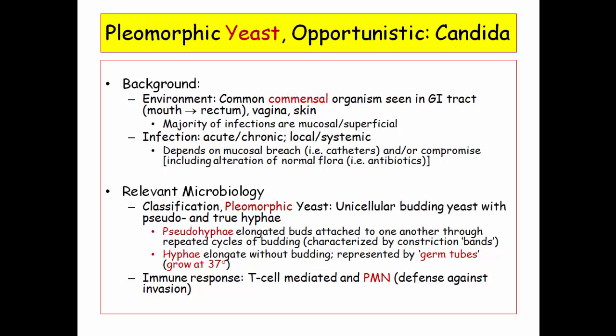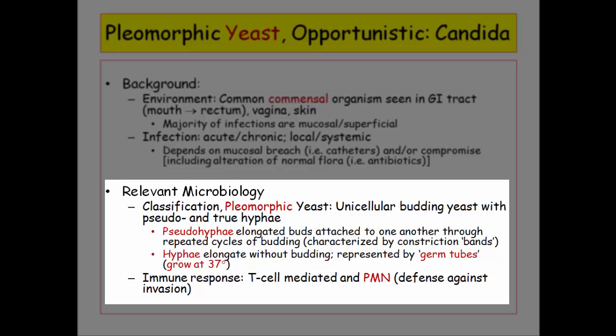You should be familiar with the terms pseudohyphae and true hyphae. Pseudohyphae are simply buds that don't detach — if you can envision that, it will also be easy to see the presence of constriction points, implying they do not have true septa. True hyphae are also described and will be represented by germ tube growth at 37 degrees. Any suggestion of germ tubes at 37 degrees is the language of candida albicans.